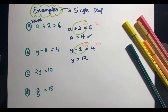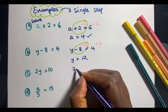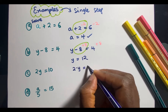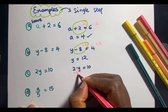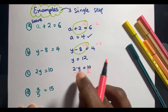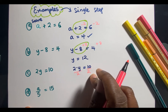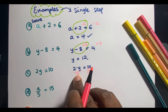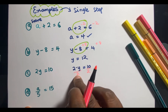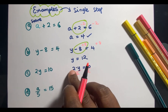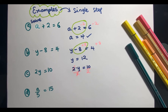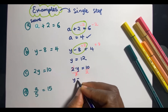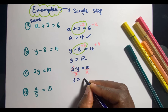Here I've got 2y = 10. 2y is the same as 2 multiplied by y. To get rid of that 2, I can divide both sides by 2. Remember, whatever you do to the left hand side you've got to do the same to the right hand side. Because we multiplied, I'm using the inverse which is divide. Dividing both sides by 2 cancels the 2, and y is equal to 10 divided by 2, which is 5.